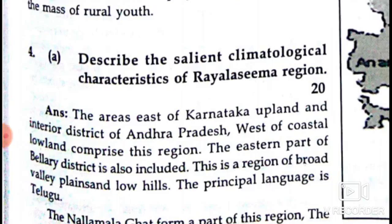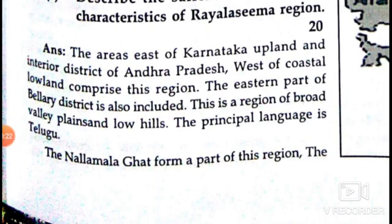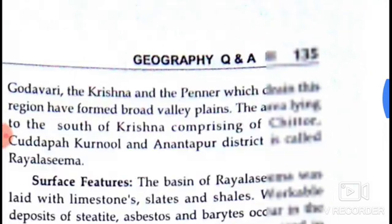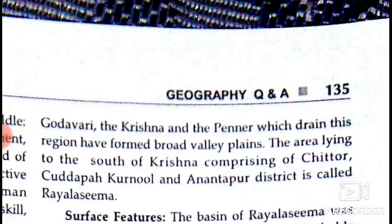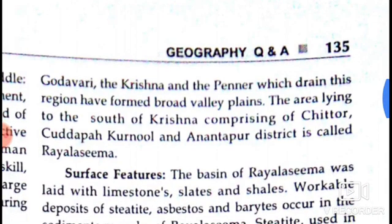The first question: describe the soil and climatological characteristics of the Rayalaseema region. The areas of East Karnataka, interior districts of Andhra Pradesh west of coastal lowlands, comprise this region. The eastern part of the Bellary district is also included. This is a broad valley region of plains and low hills. The principal language is Telugu. The Nallamala ghats form a part of this region. The Mahadavi, Krishna and Pennar rivers drain this region and have formed broad valley plains.